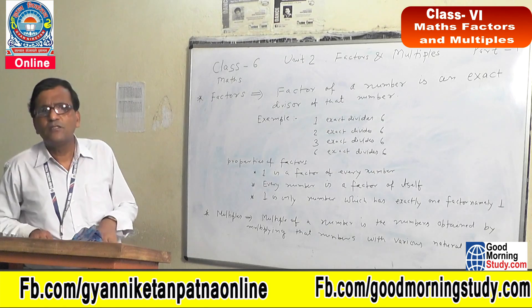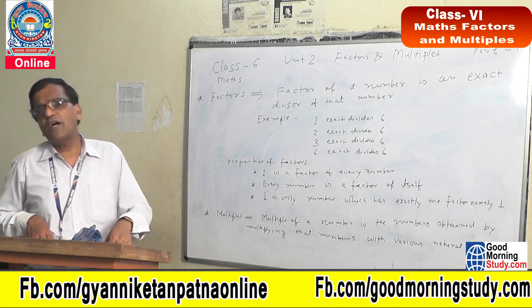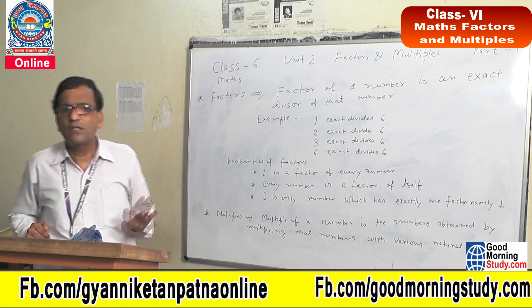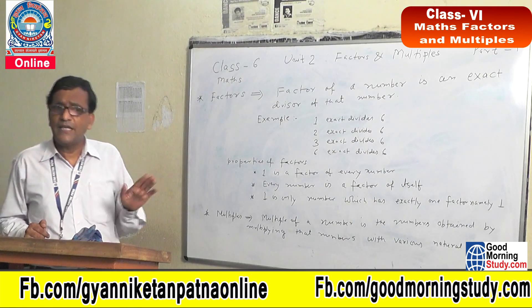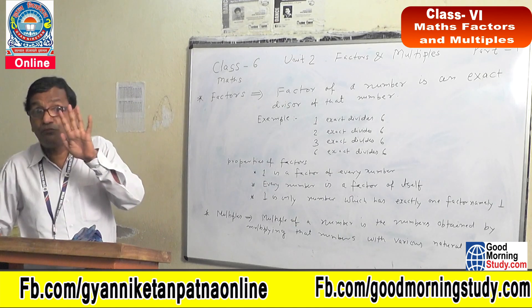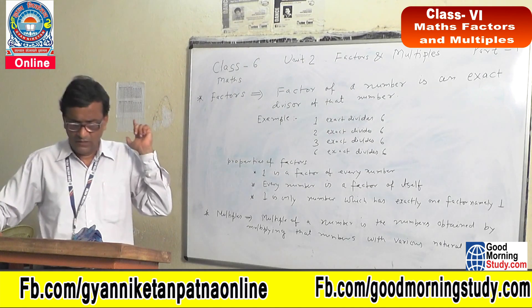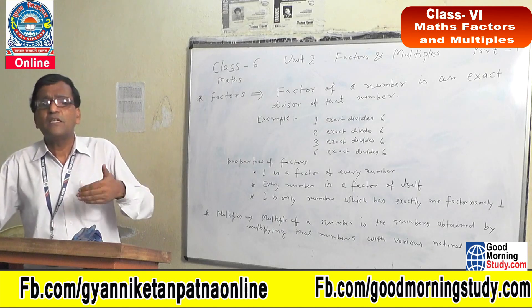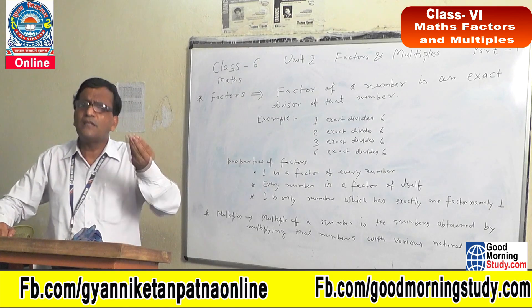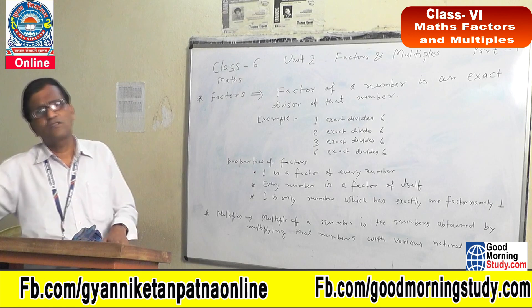Now, the second topic is Multiples. How do we obtain multiples? A multiple of a number is the number obtained by multiplying that number with various natural numbers. If the question asks for the first 5 multiples, you multiply the given number by 1, 2, 3, 4, 5. If the question asks for any 5 multiples of 6, you can multiply 6 by any natural number such as 9, 10, 100, or 20.